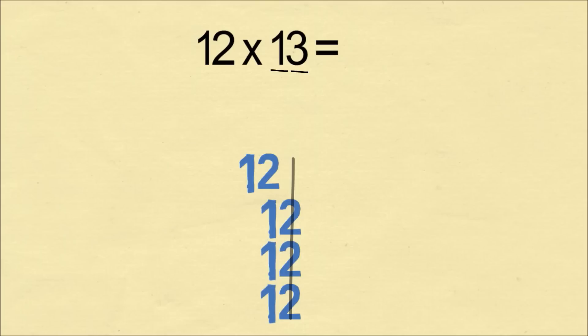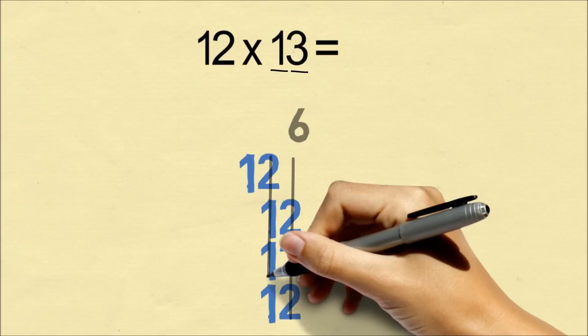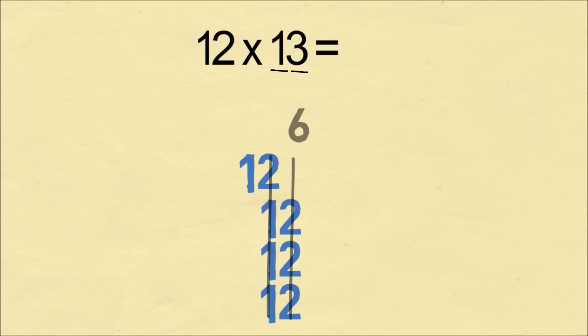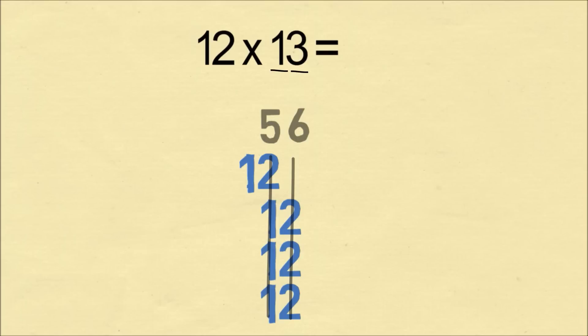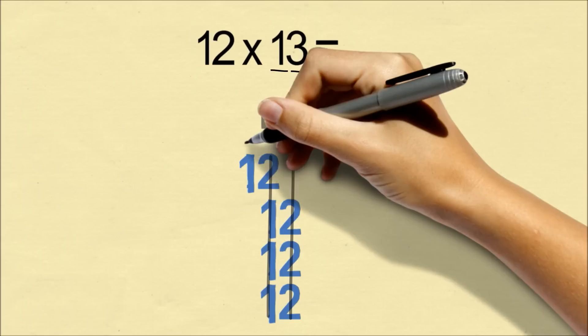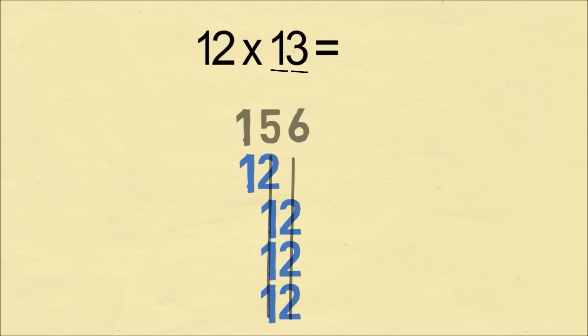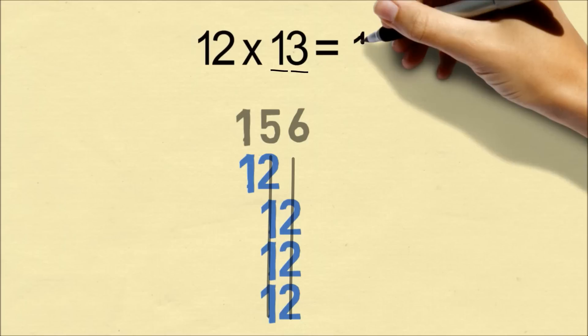Now we will add up the columns. On the far right column, we have 2 plus 2 plus 2, which is 6. Then we go to the middle column. We have 2 plus 1 plus 1 plus 1, which will be 5. In the final column on the left, we just have a 1, so we're going to write a 1. And that's it! 156 is going to be our answer.